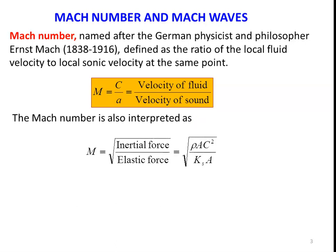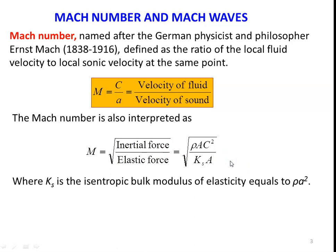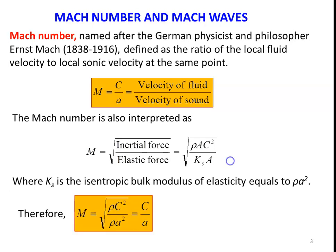There is another way to interpret the Mach number. M equals the square root of inertia force divided by elastic force, which is the square root of (rho·A·C²) divided by (Ks·A), where rho·A·C² is the inertia force and Ks is the isentropic bulk modulus of elasticity, equal to rho·A². Substituting for Ks and simplifying, we again get Mach number equal to C/A.